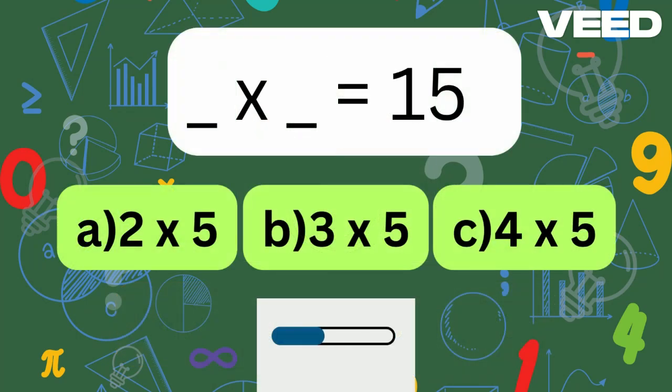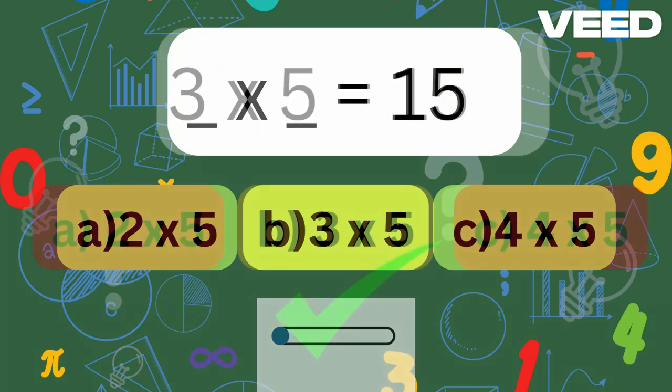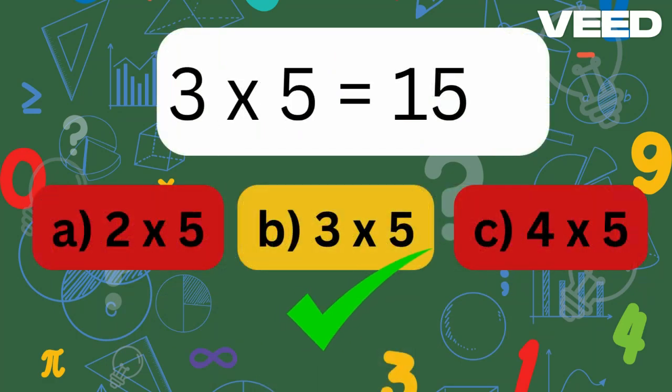What times what equals 15? Correct, 3 times 5 is equal to 15.